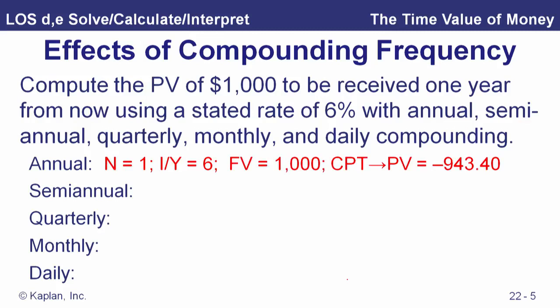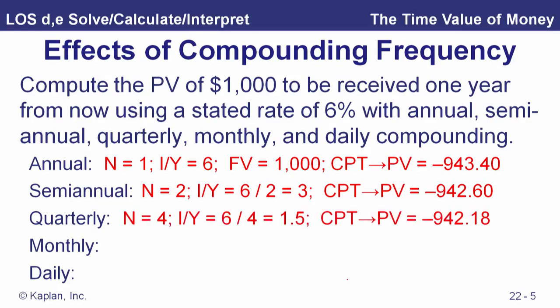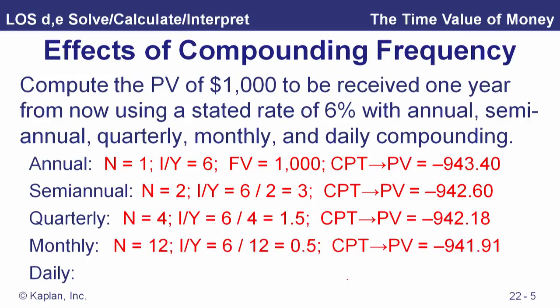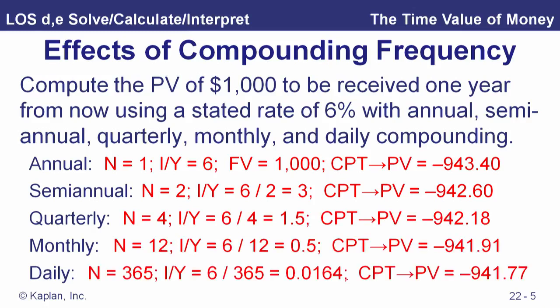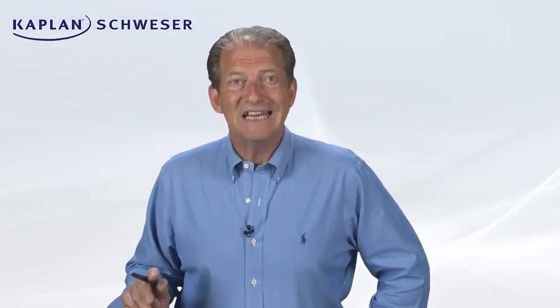The present value of that $1,000 is $943.40 with 6% annual compounding. With semi-annual compounding, the effective annual rate is a little higher, so the present value is a little lower. Using those same terms for quarterly, monthly, and daily compounding, the values keep getting smaller. With daily compounding, N equals 365, our interest rate is 0.0164%, and we compute a present value of $941.77. In each case, payment is implicitly zero — no money in or out over the year.